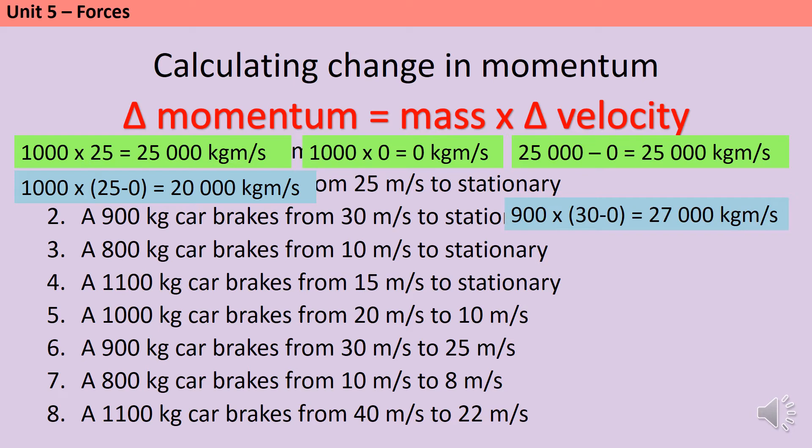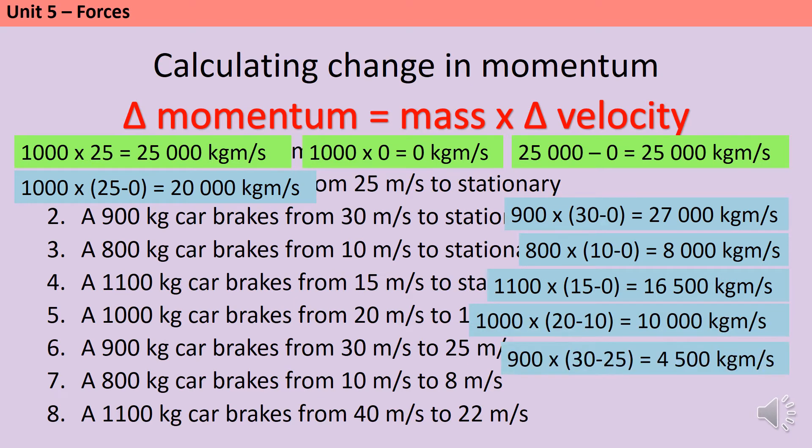For our third question, 800 kilograms multiplied by 10 is going to be 8,000, and then we have 16,500 kilogram meters per second, 10,000 kilogram meters per second, 4,500 kilogram meters per second, 1,600 kilogram meters per second, and 19,800 kilogram meters per second. And those are the same answers that you would have got if you'd used the first method.